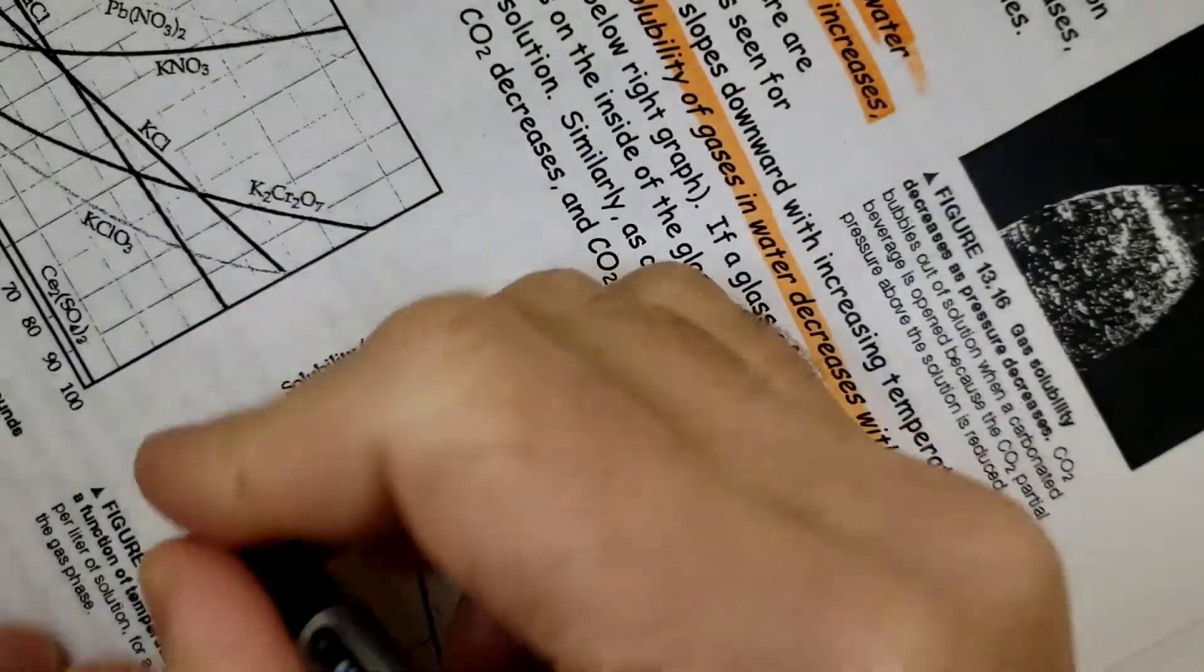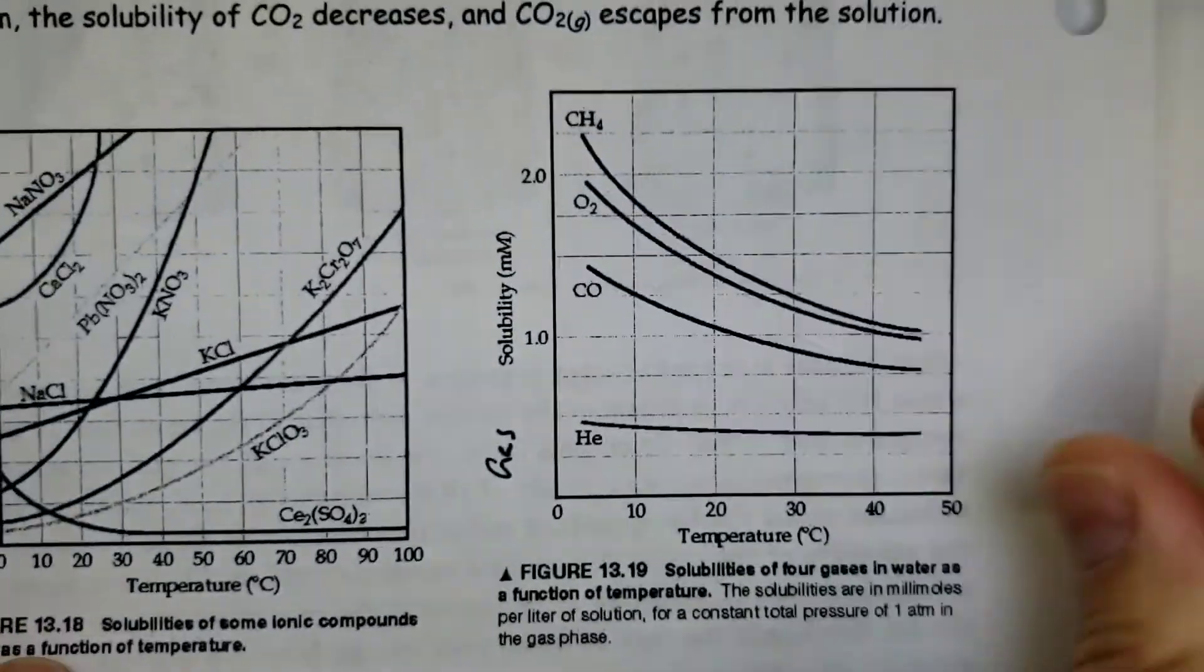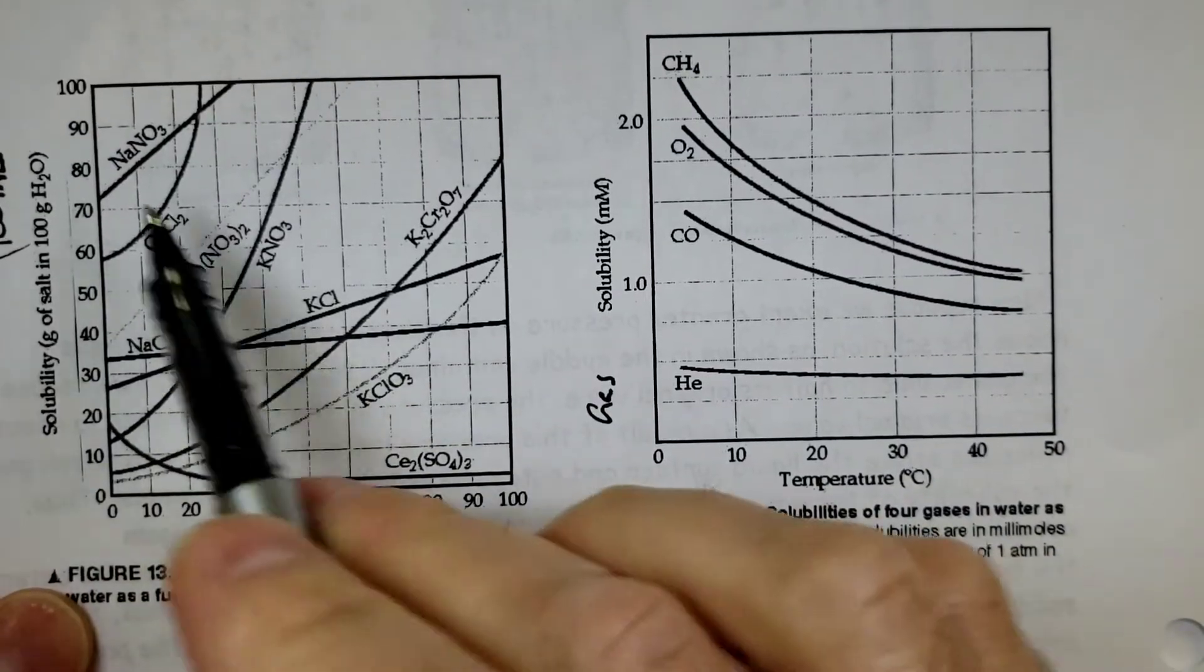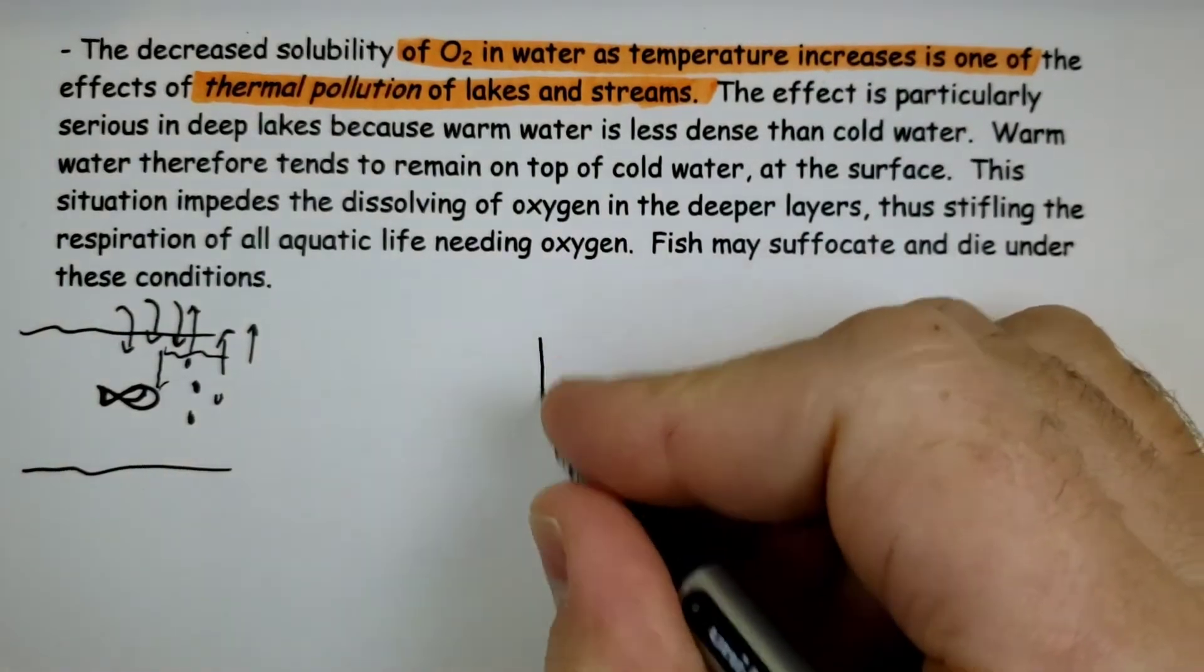So this second graph here deals with gas solubility. Now, no matter which one of these I look at, there's a curve here. So a particular curve for a substance. Let's just sketch a generic graph here.